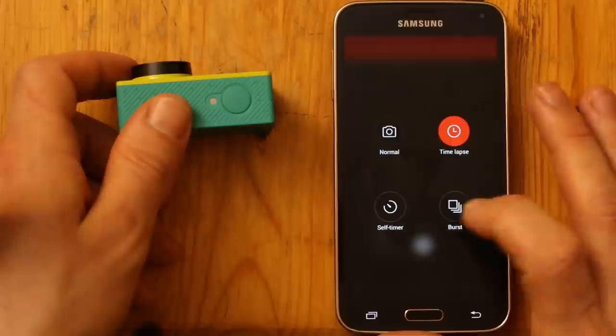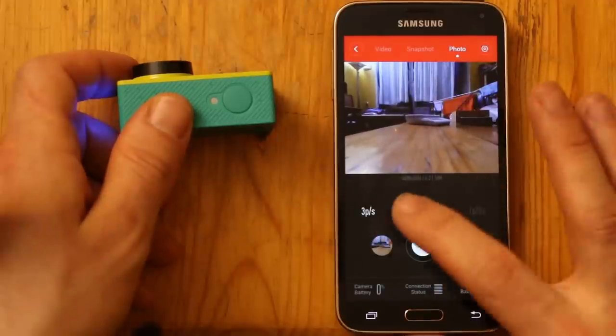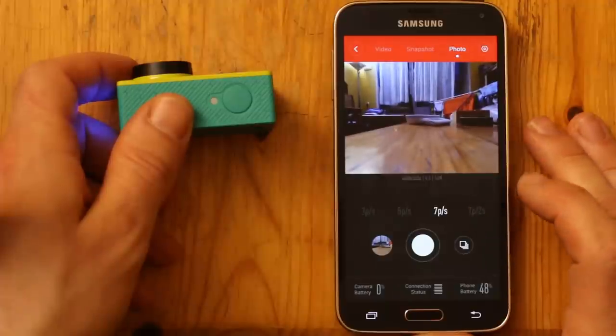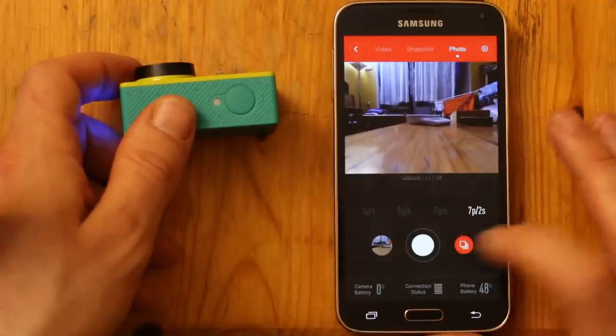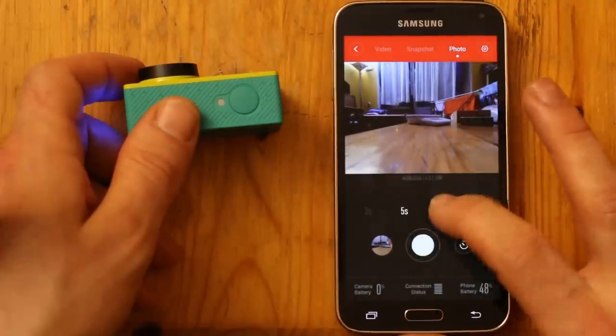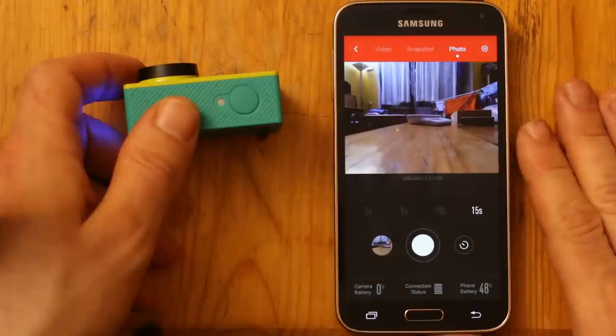You can do bursts, three photos per second, five photos per second, seven photos per second, or seven photos in two seconds. And you can have self-timer of three seconds, five seconds, ten seconds, or fifteen seconds.